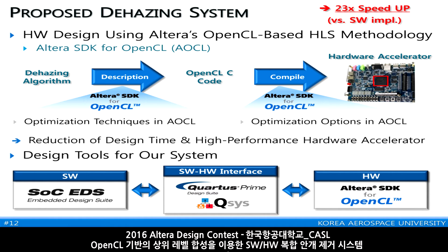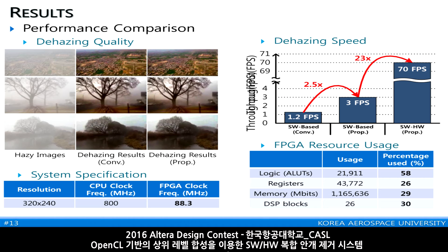소프트웨어 기반 시스템 대비 총 23배의 성능 향상을 얻을 수 있었습니다. 알고리즘 측면에서 설명드리자면, 왼쪽이 기존 원본 안개 이미지, 가운데가 컨벤셔널 알고리즘의 결과, 오른쪽이 저희가 제안하는 디에이징 알고리즘의 결과입니다. 디에이징 퀄리티 측면에서 두 알고리즘의 결과가 큰 차이가 없음에도 불구하고, 네 가지 테크닉을 이용해 2.5배의 성능 개선을 이룰 수 있었습니다.